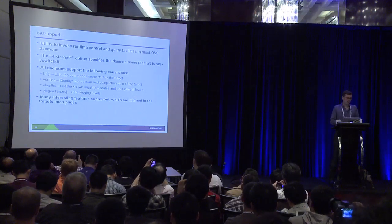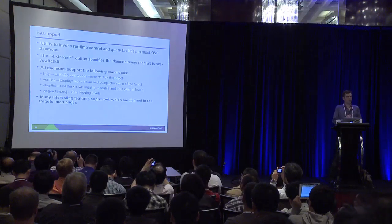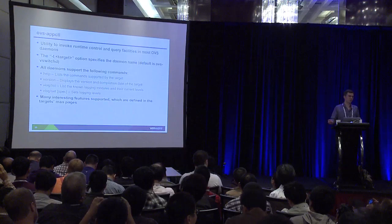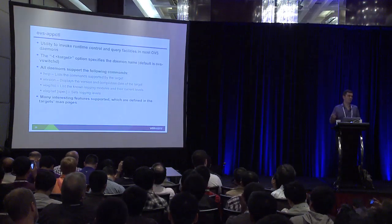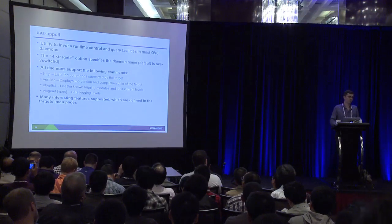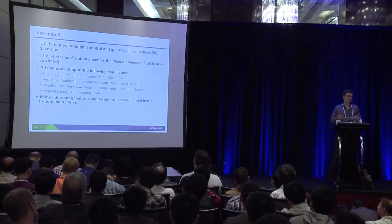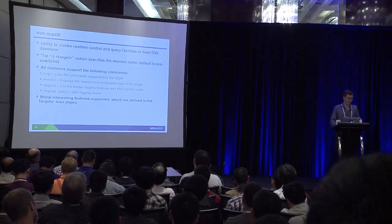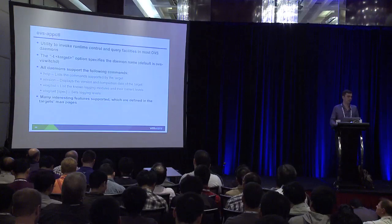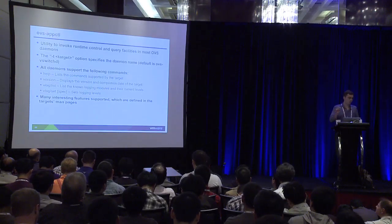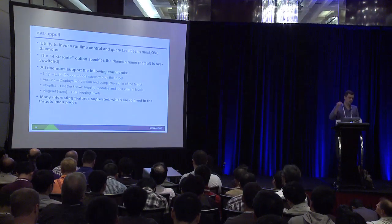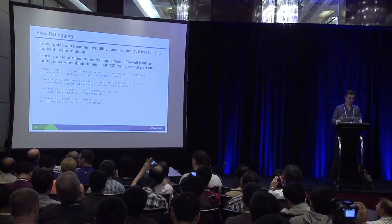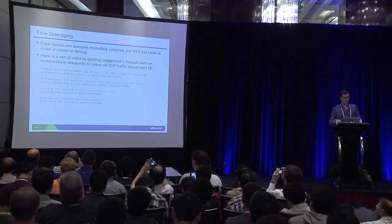ovs-appctl is another utility used to query or make changes to the runtime of the switch. By default, if you don't specify a target it communicates with OVS vSwitchD, but you can also change the target — for example, using dash-t ovsdb-server to talk to OVSDB server. Each OVS daemon has a set of commands unique to it. If you run ovs-appctl help it will show what's available. All daemons support help, a version command showing the runtime version, and the ability to configure the logging level. I'll show an example here of using the appctl command for debugging a flow table.